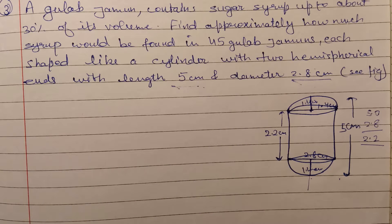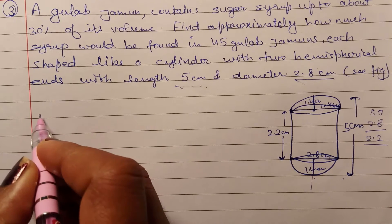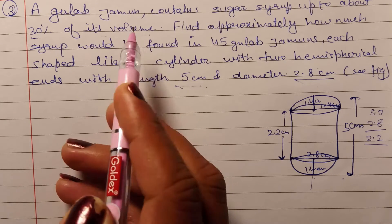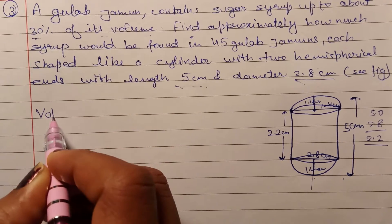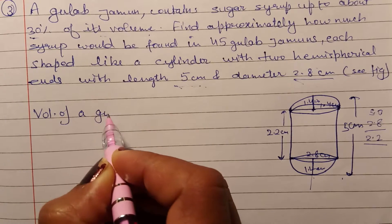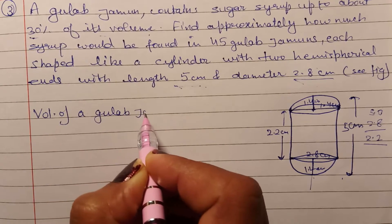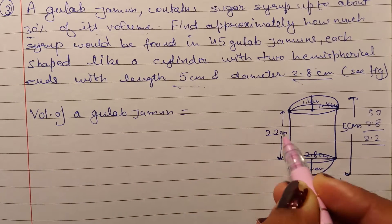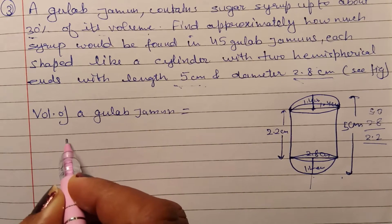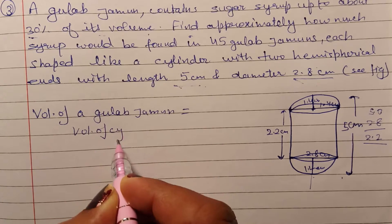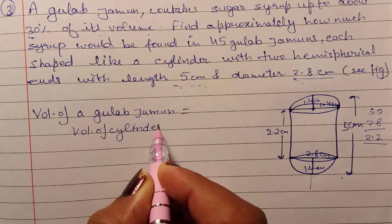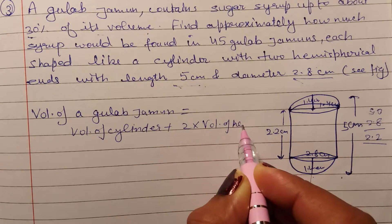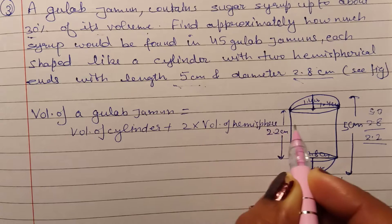अब हमें एक gulab jamun का पहले volume निकालना होगा, क्योंकि उन्हें बोला है 30% of its volume। तो उसके volume का 30% हम निकालेंगे। Volume of एक gulab jamun = volume of cylinder + 2 × volume of hemisphere।